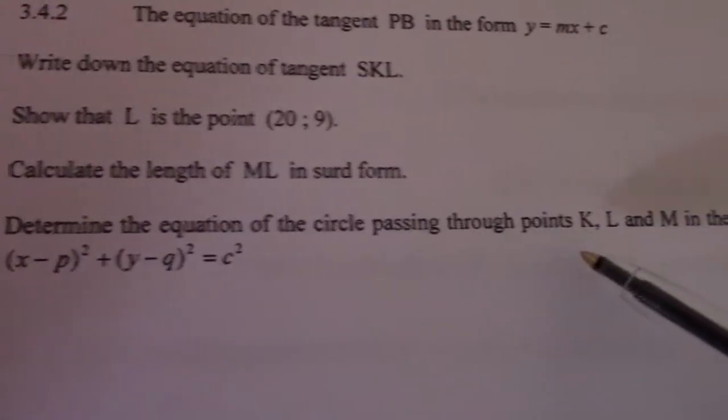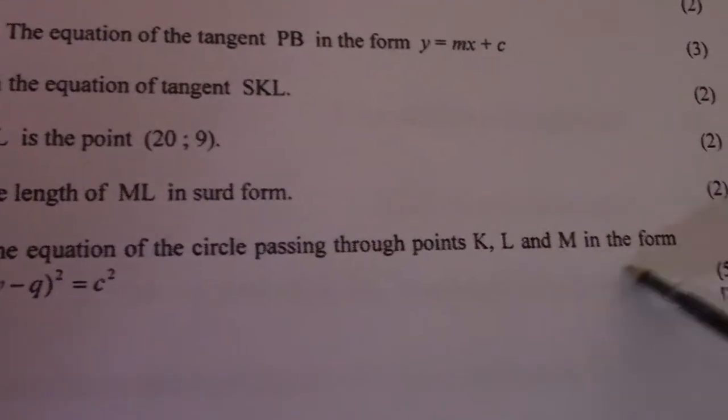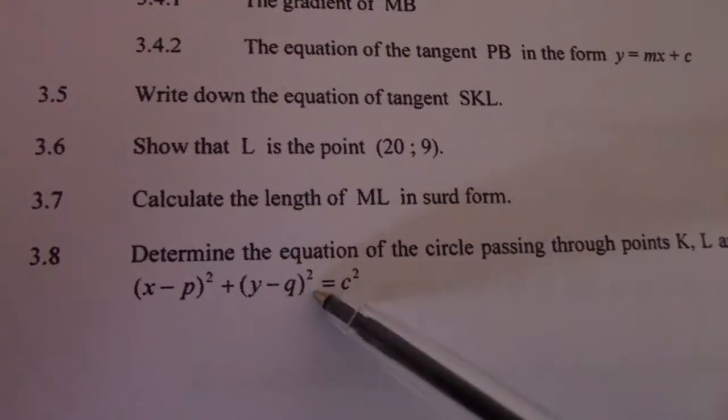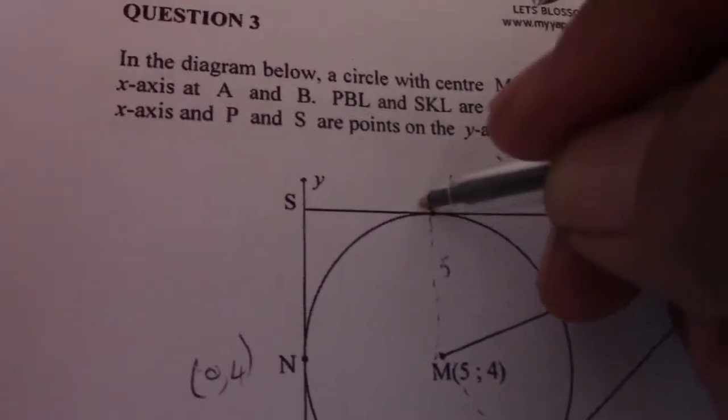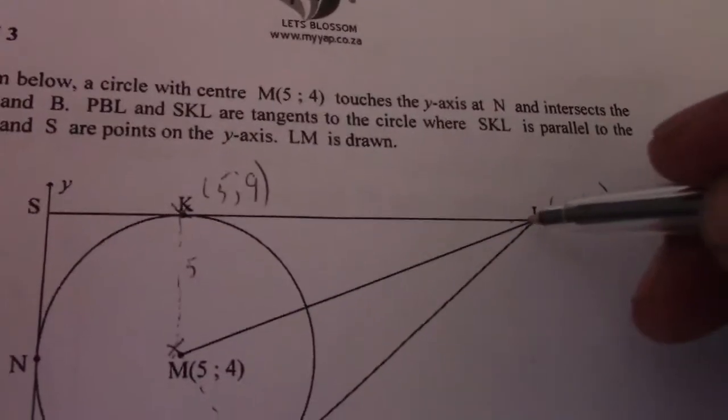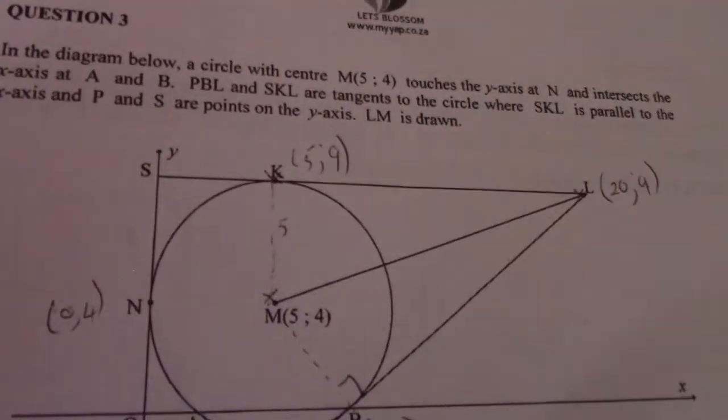Determine the equation of circle passing through points K, L and M in the form x minus P squared plus y minus Q squared equals C squared. So now we want the equation if we had a circle going through K, through M and through L.